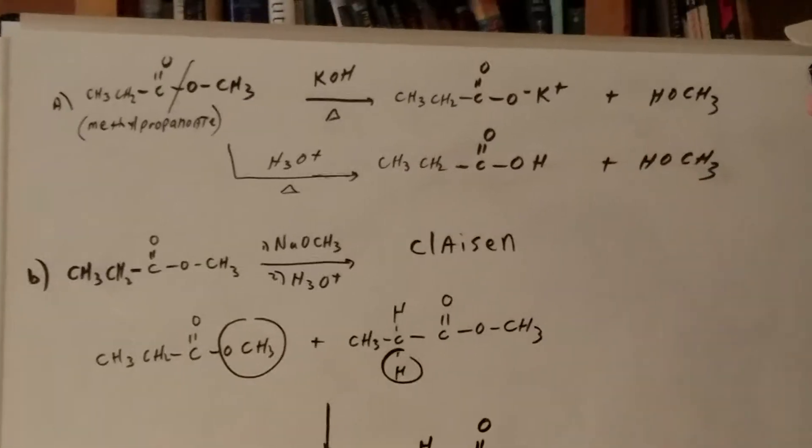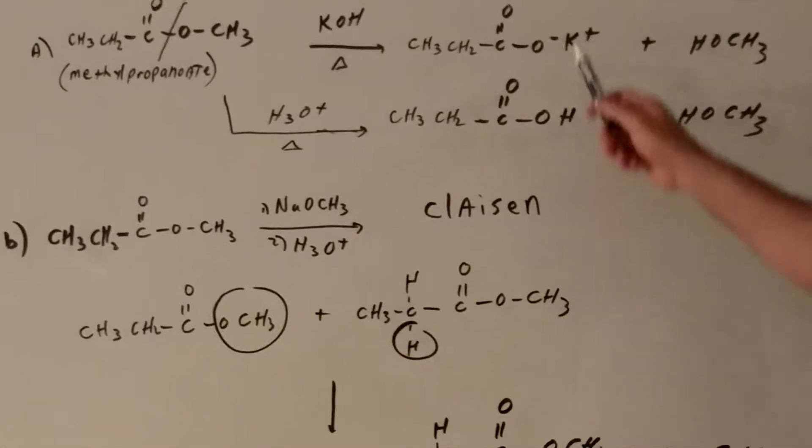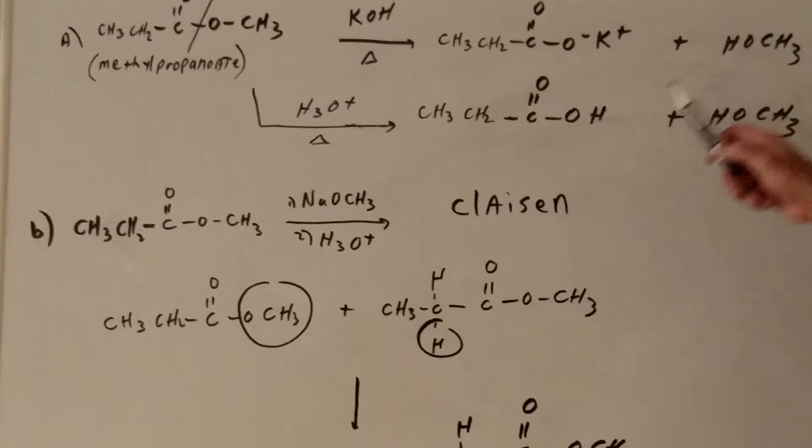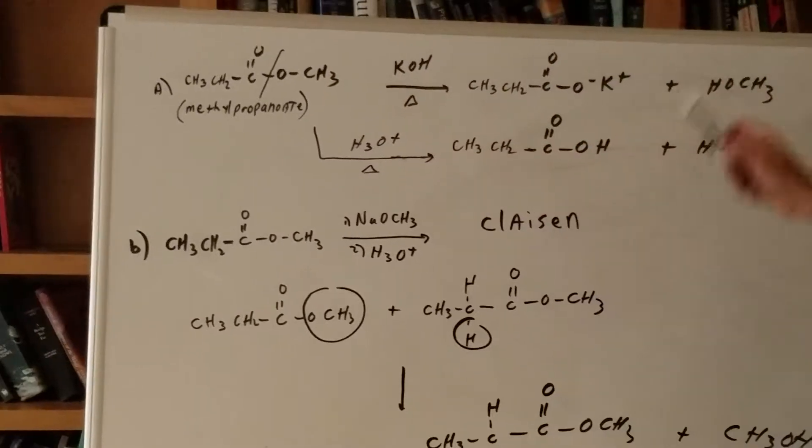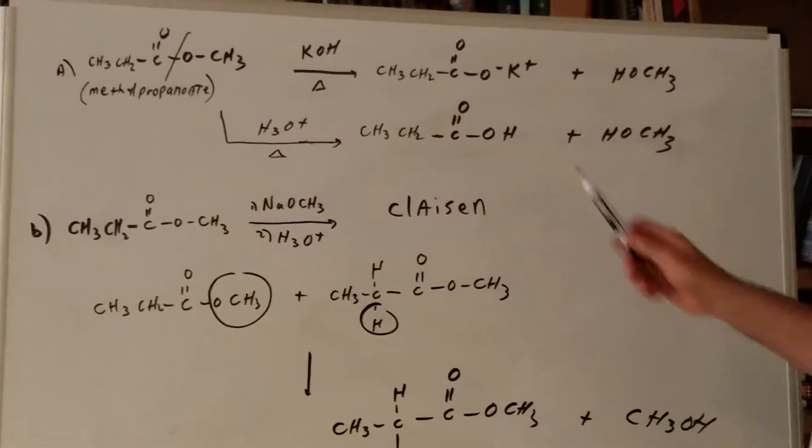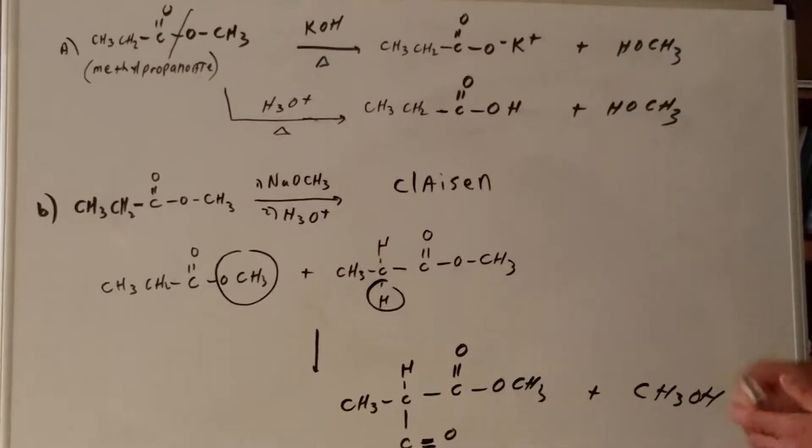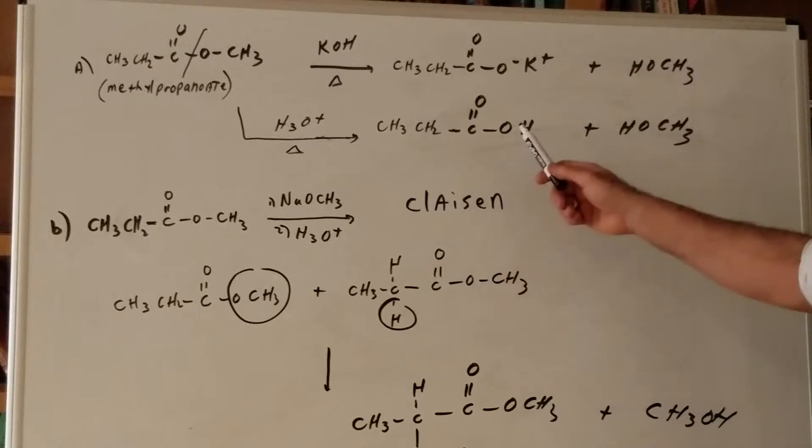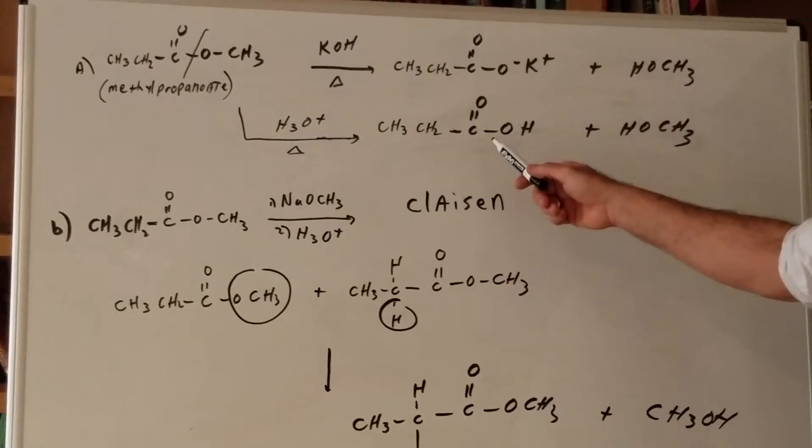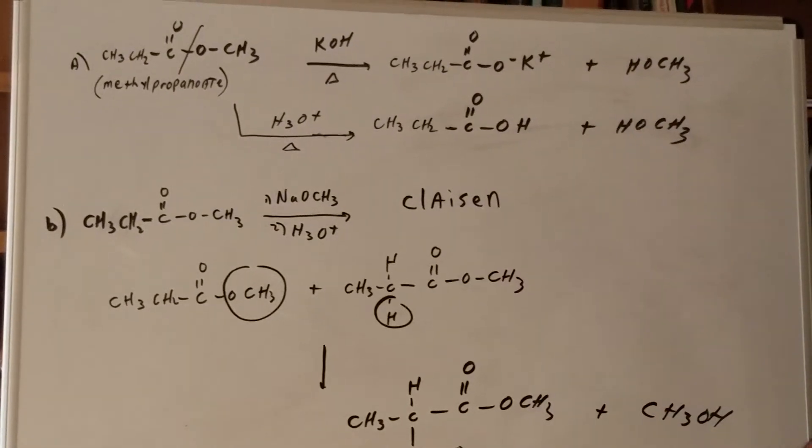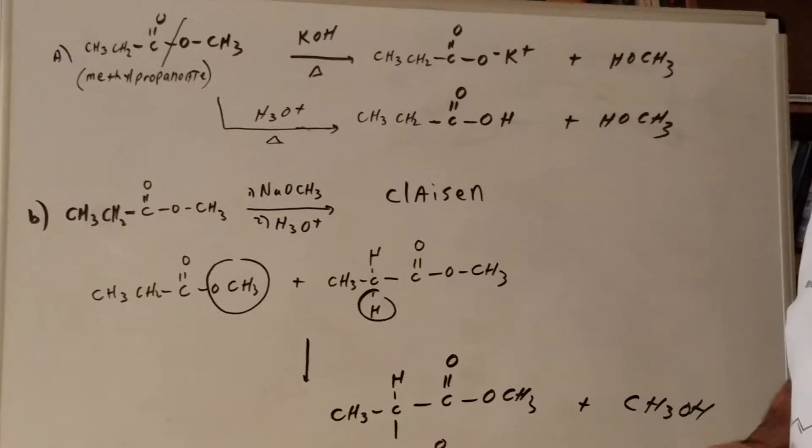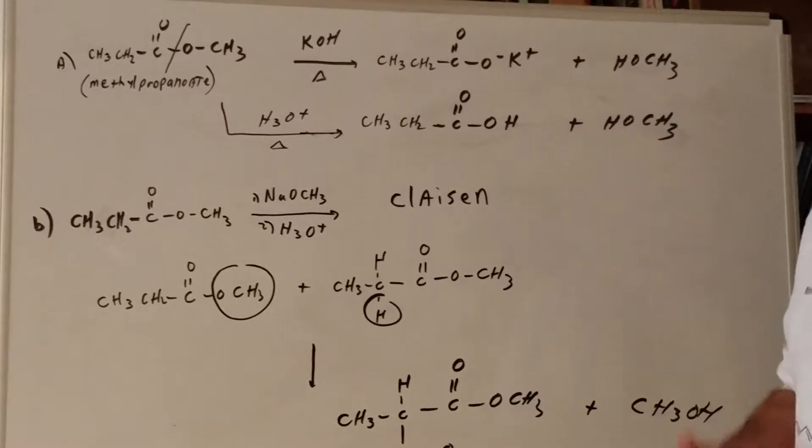If you do it under basic conditions, you would get the carboxylic salt and you would get, obviously if you cut it this way, the alcohol. So you've got a carboxylic salt and an alcohol. If you did it under acidic conditions, you would get the carboxylic acid and the alcohol. Those two I think most kids would think are straightforward. So you see an ester, you're going to remember, hydrolyze it.